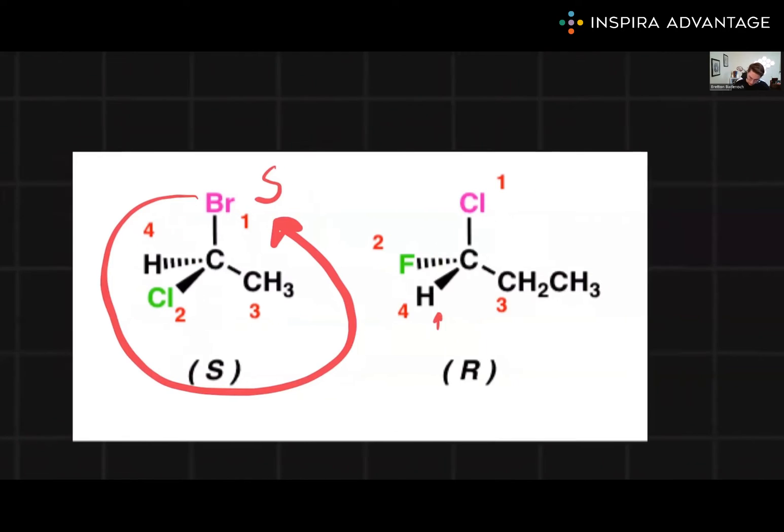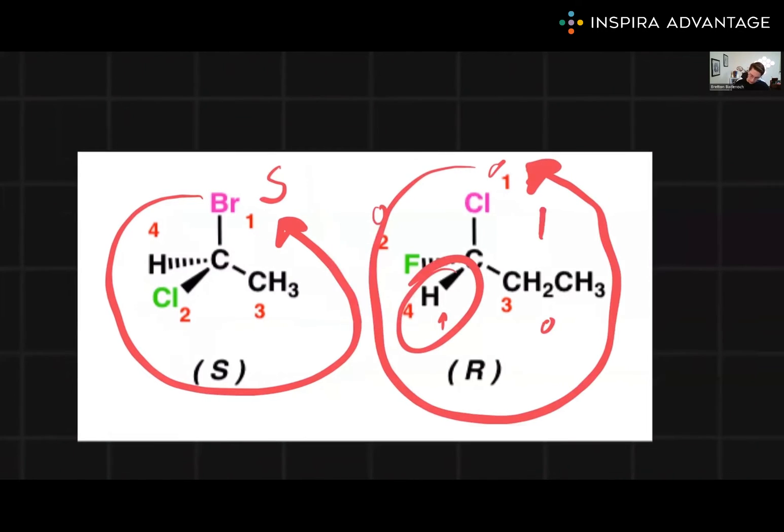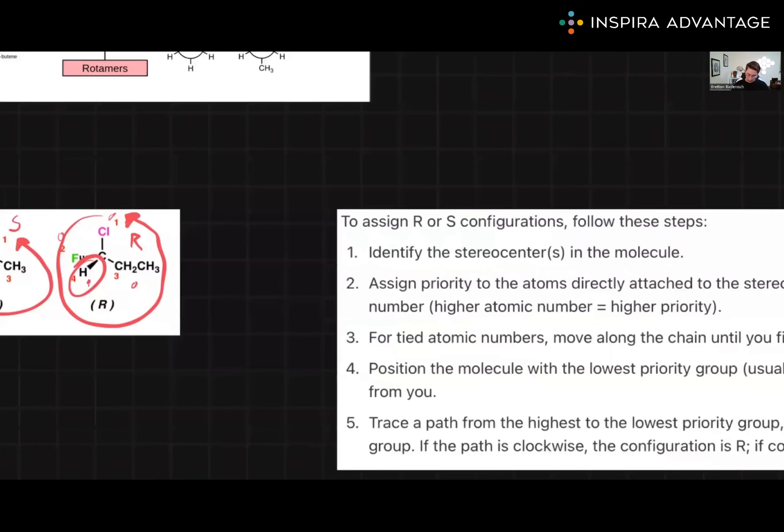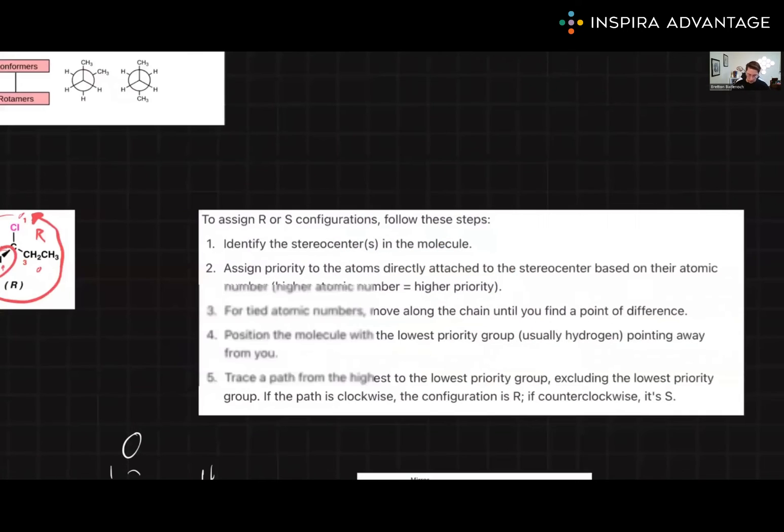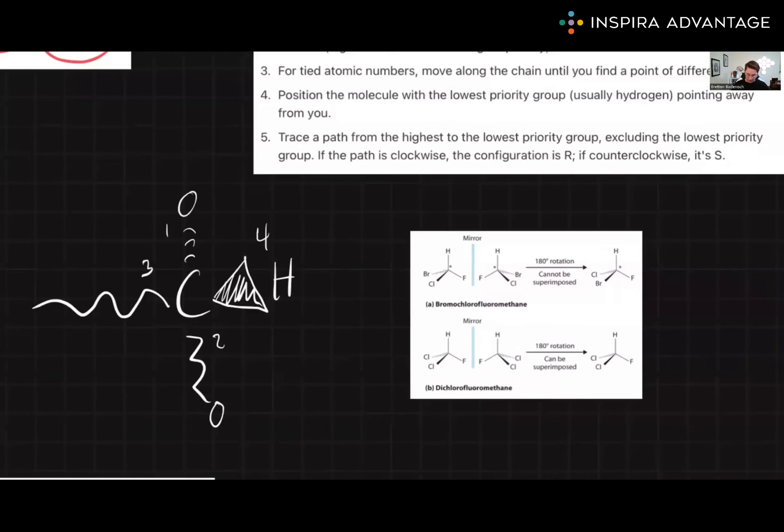Now for the R enantiomer, we've got one, two, and three here. We're going in the same direction again. But in this case, we do have the lowest priority sticking out at us. So we have to flip stereochemistry into the R configuration. Applying the CIP system gives a clear, unambiguous description of the molecule's stereochemistry. Here are the rules, if you want to grab a screenshot. I find it helpful to have.